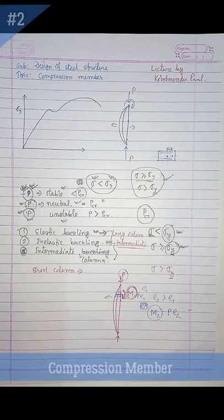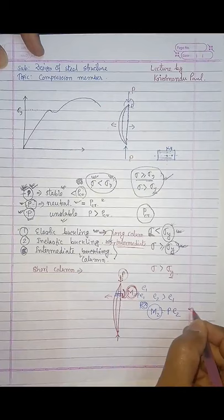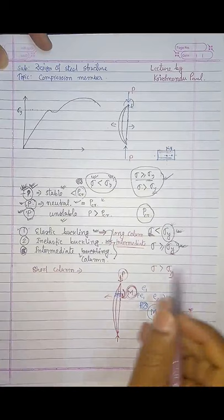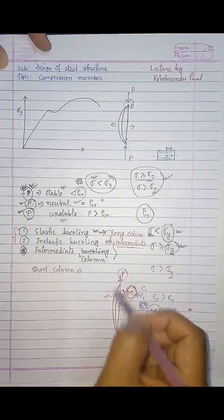Hello students, in the last video session we stopped at this part. The important topics were long column, short column, and progressive failure. Let us quickly revise this topic.